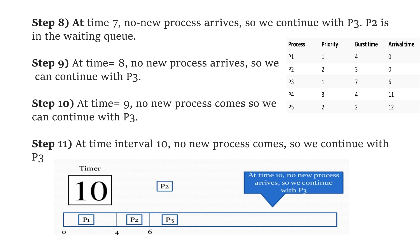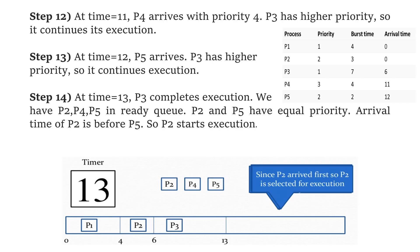At time 7, no new process arrives, so we continue with P3 while P2 is in the waiting queue. At time 8, 9, and 10, no new process arrives, so P3 will be executing. Since P3 has a burst time of 7, it continues executing as shown in the diagram. At time 11, process P4 arrives with a priority of 4, but P3 has higher priority so it continues its execution.